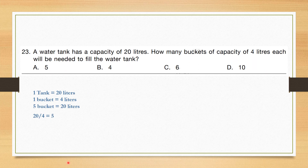Question number 23: A water tank has a capacity of 20 liters. How many buckets of capacity 4 liters will be needed to fill the water tank? We divide 20 by 4 to get the number of buckets: 20 ÷ 4 = 5. Correct answer is option A, 5.